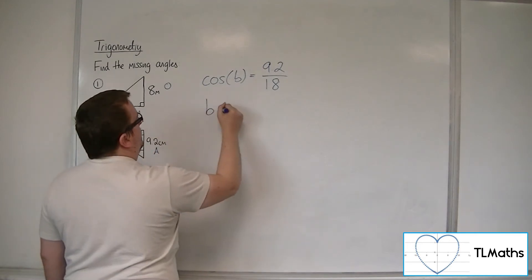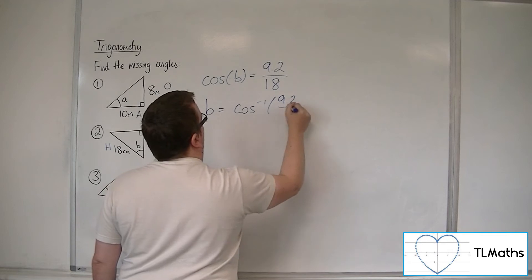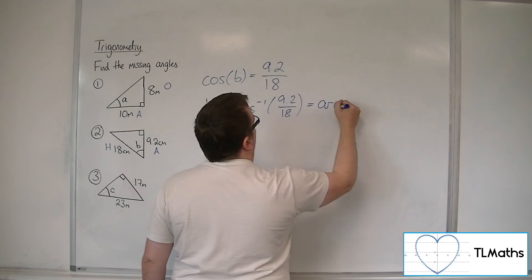So B is equal to the inverse cosine of 9.2 over 18, which, much like arc tan, we've got arc cos.